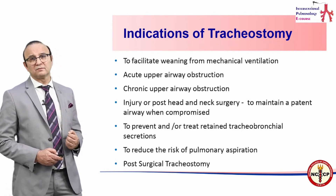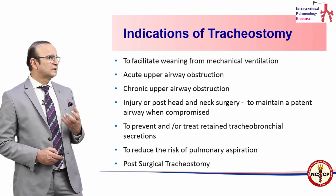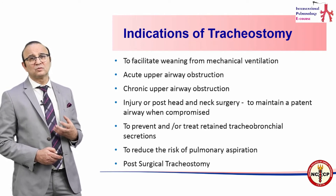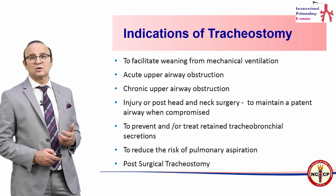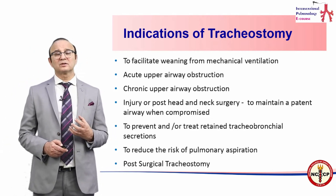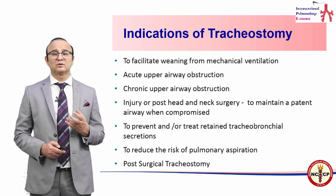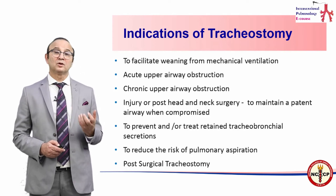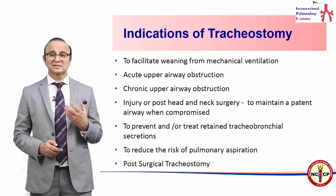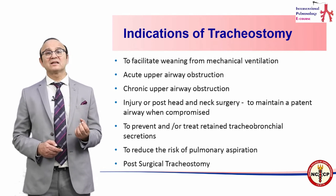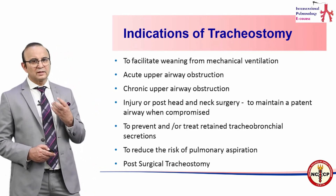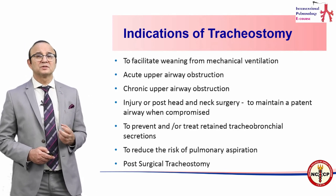Chronic upper airway obstruction, and injury to the head and neck area where the airway could be compromised are further indications. Tracheostomy is also done to prevent and treat tracheobronchial secretions in patients suffering from neurological diseases such as motor neuron disease, terminal Parkinson's, or CVA, where you want to protect the airways and reduce the risk of aspiration.